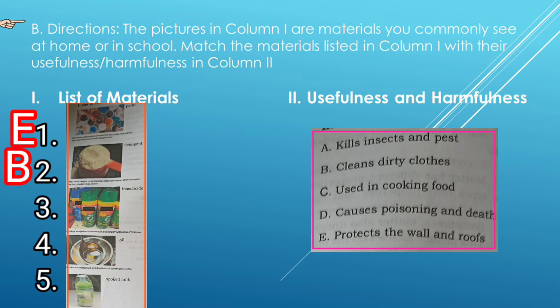Number 2: B — Cleans dirty clothes. Number 3: A — Kills insects and pests. Number 4: C — Used in cooking food. Number 5: B — Causes poisoning and death.